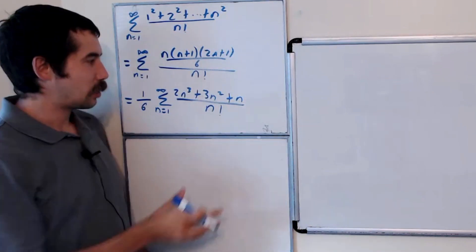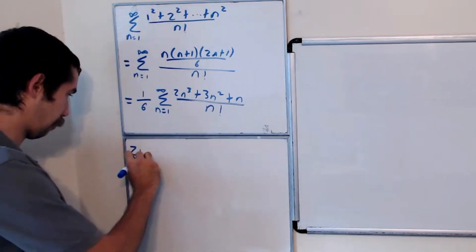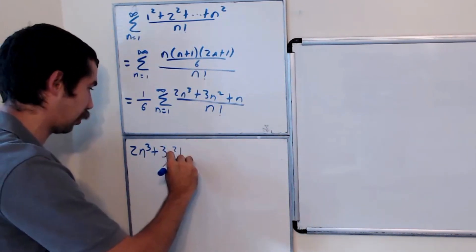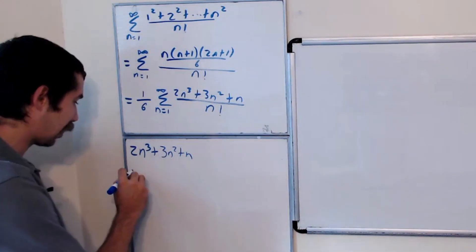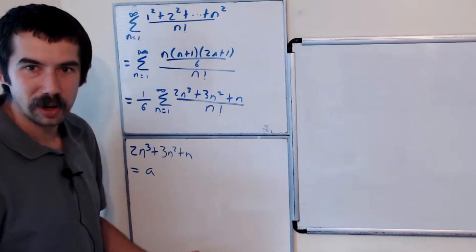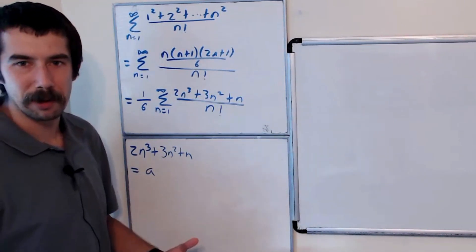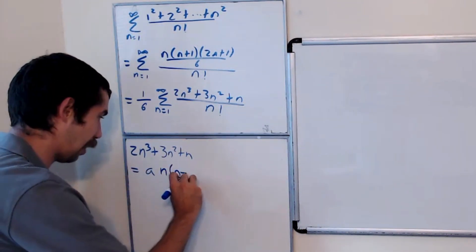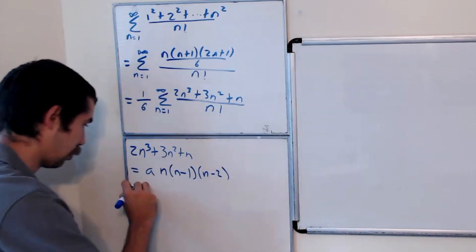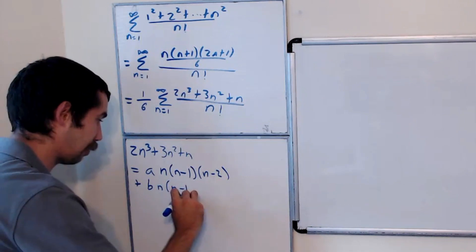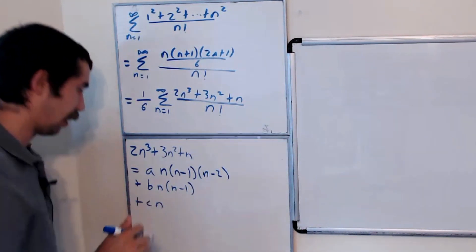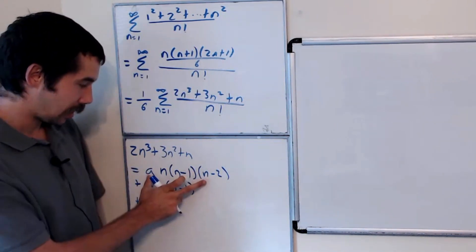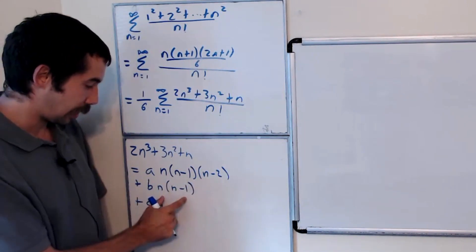What we're going to do now is take our numerator — 2n cubed plus 3n squared plus n — and write it as a linear combination in a certain polynomial basis. This basis behaves well with the factorial. We want to write it as a times n(n−1)(n−2), plus b times n(n−1), plus c times n. Our goal is to find the values a, b, and c such that this polynomial is expressed as a linear combination of these three polynomials.